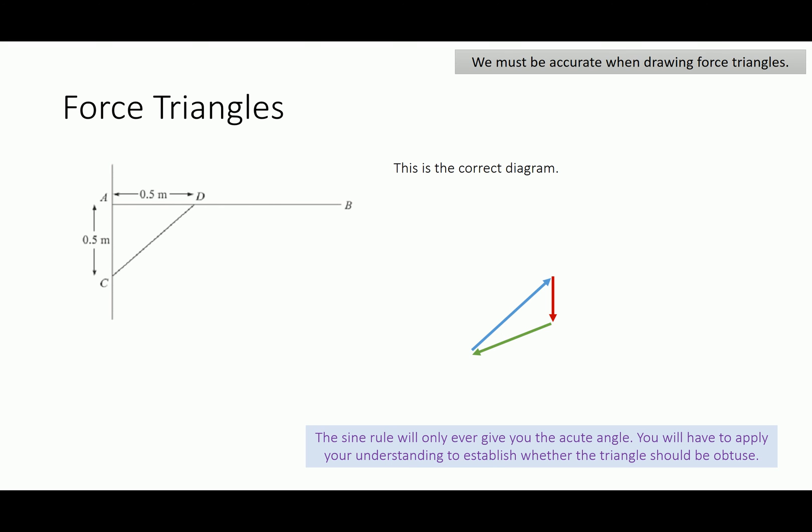The important thing to remember here is where you might end up using the sine rule at some point. The sine rule will only ever give you an acute angle. So you then have to use your diagram and your understanding to interpret whether or not you should be using the acute angle or an obtuse angle.